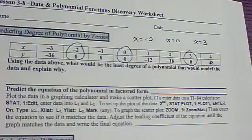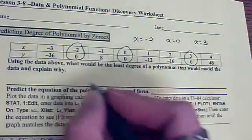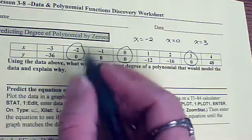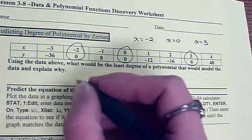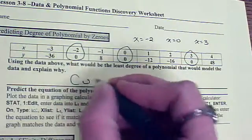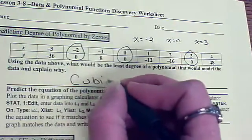Could some of them have been double or triple? I don't know. But I know it's going to at least have a degree of 1, 2, 3 — so it's at least going to be a cubic.